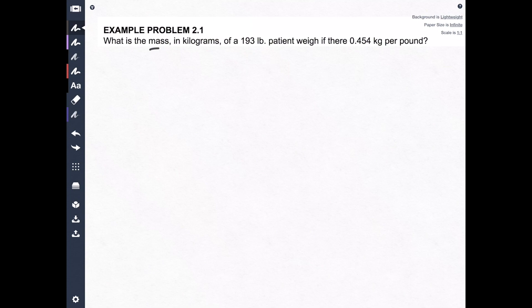What is the mass, let's underline that because that's what we're trying to do, in kilograms? So, of a 193 pound patient, if there are 145 kilograms per pound. Alright, so we got a lot of information there, a lot of good information there.